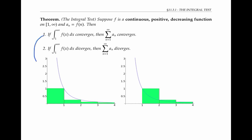If the integral converges, we use the picture using right endpoints to draw rectangles. The area of each rectangle is the same as its height, since the rectangle has base one, and the height of each rectangle is just f sub n. So the area of the first rectangle is just f sub one, which is a sub one; the area of the second rectangle is f sub two, which is a sub two, and so on.